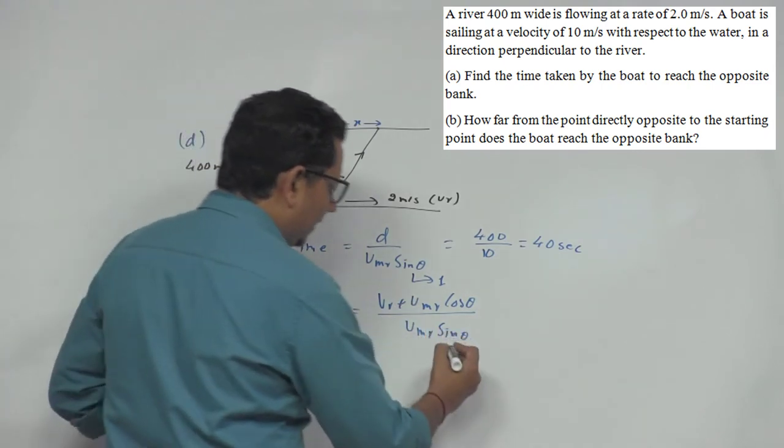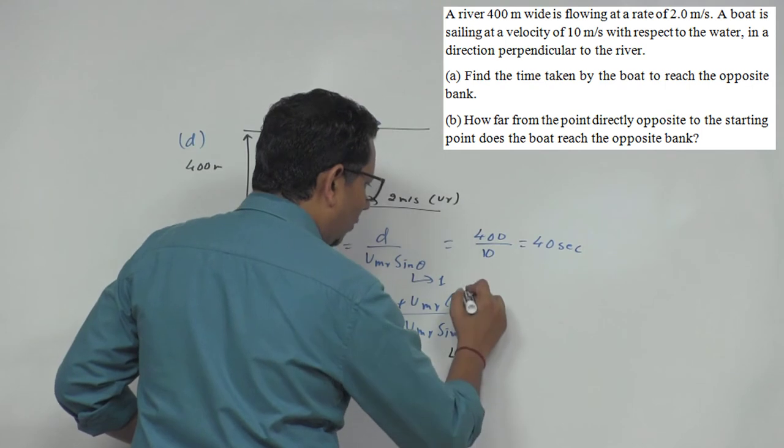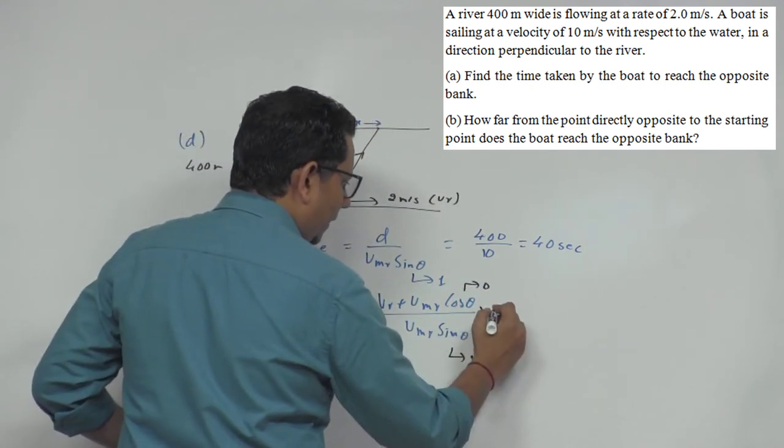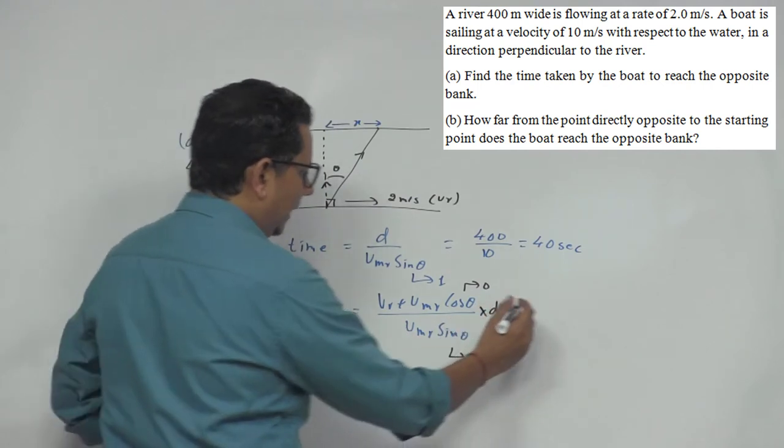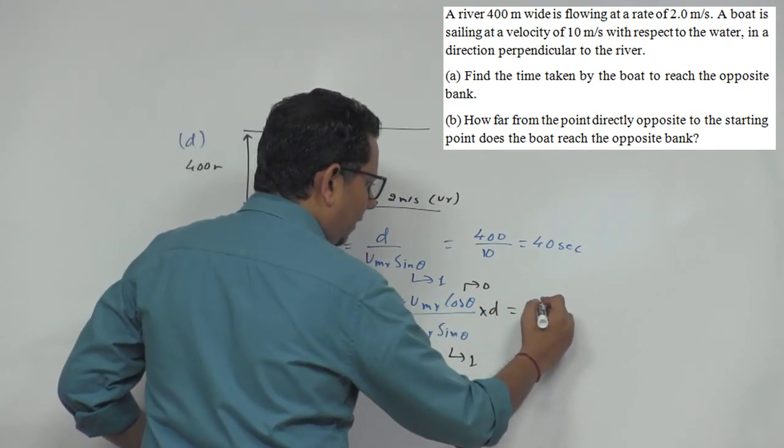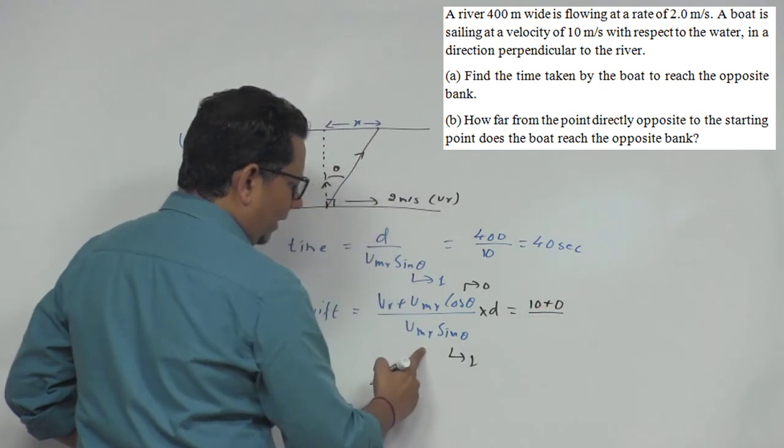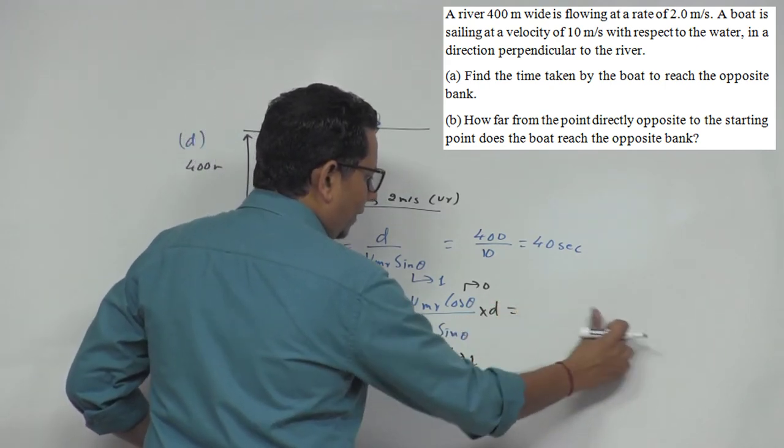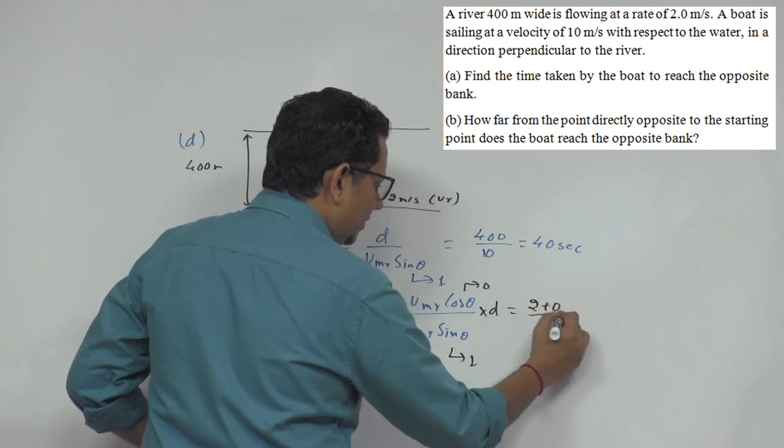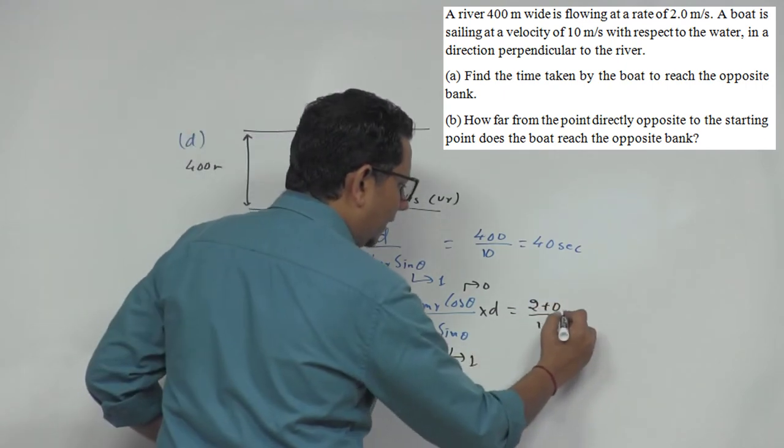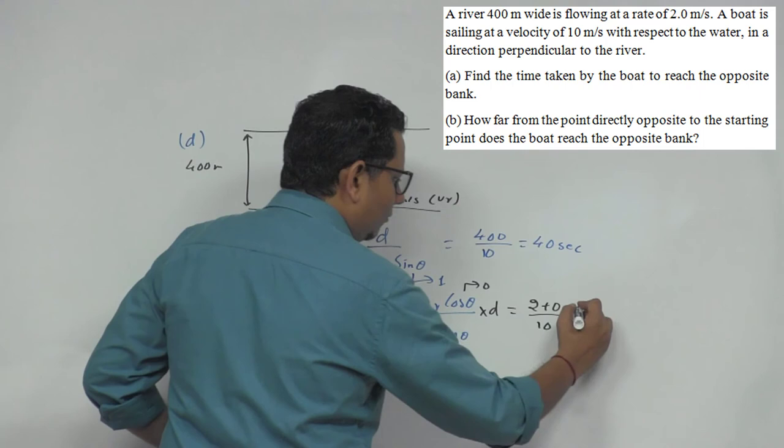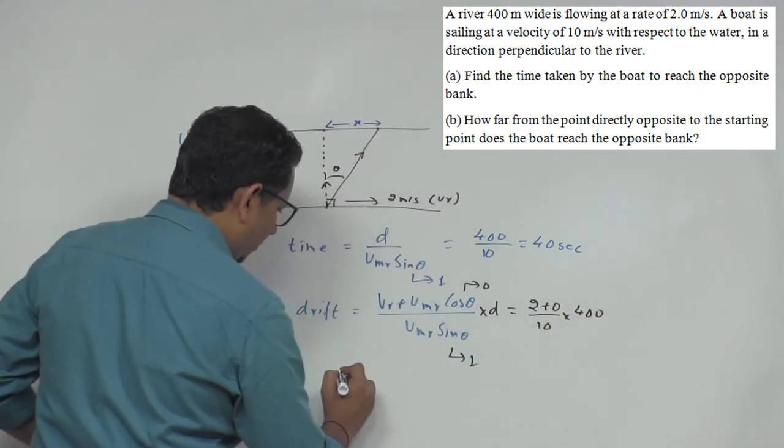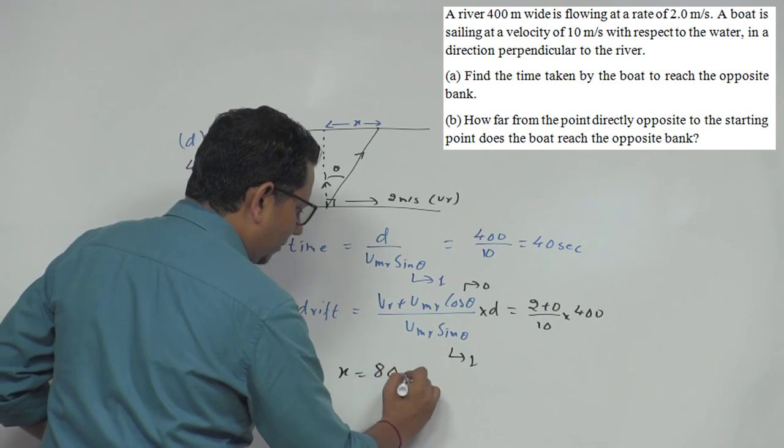So this equals Vr - which is 2, not 10, sorry - so this is 2 plus 0, divided by VmR, which is 10, multiplied by D, which is 400. So this equals 800 divided by 10. The drift X equals 80 meters.